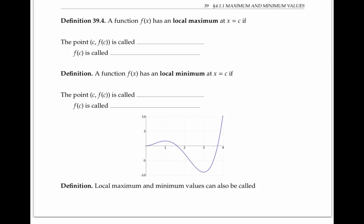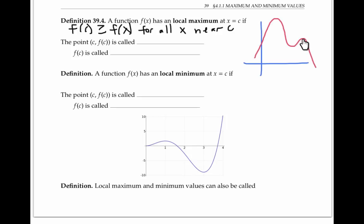In addition to absolute max and mins, we can talk about local maximums. A function f of x has a local maximum at x equals c, if f of c is greater than or equal to f of x for all x near c — meaning there's some open interval around c for which this is true. For our graph of f, we have a local maximum right here, even though there's a higher point elsewhere, since this is the highest point in an open interval around c. The point (c, f(c)) is called a local maximum point, and the y value f of c is called a local maximum value.